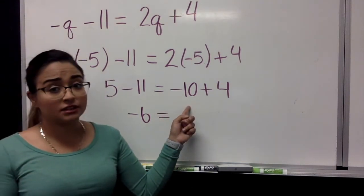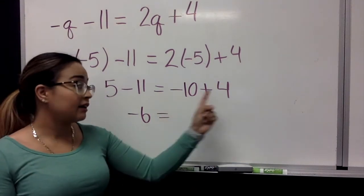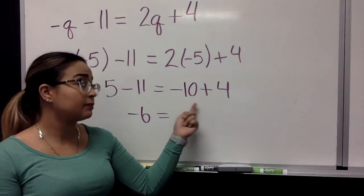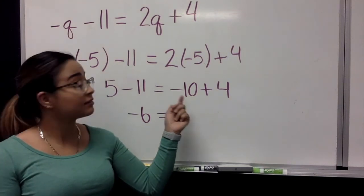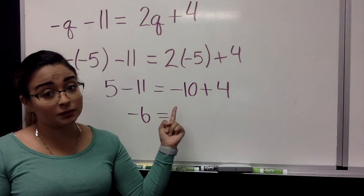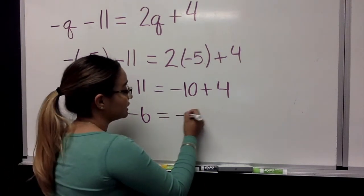Here we have a similar situation. We have negative 10 plus 4. We're going to be subtracting 4 from 10 because 10 is negative. And since 10 is our bigger number, our answer will be negative and it is indeed negative 6.